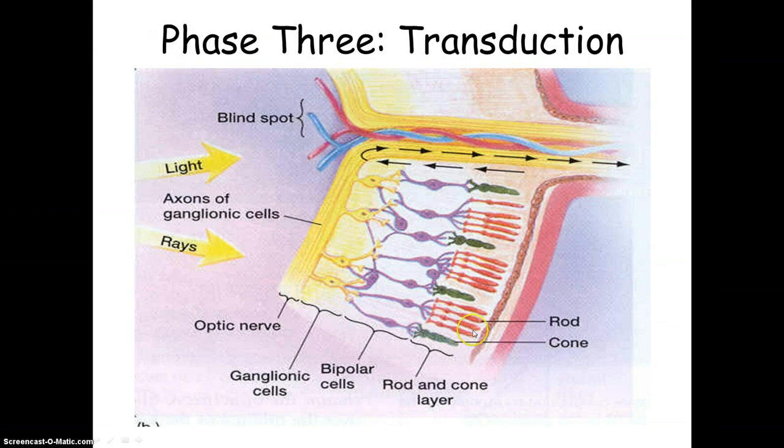So when these neural signals are sparked, the bipolar cells are activated. Here they are. And the bipolar cells activate the ganglion cells.